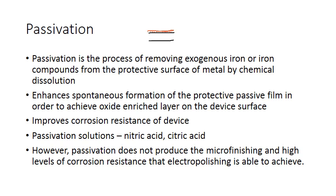Passivation involves putting metal pieces into passivation solutions such as nitric acid or citric acid, which essentially clean the device and remove any compounds that shouldn't be there, helping to protect the passive oxide layer. It doesn't produce the micro-finishing and high levels of corrosion resistance that electropolishing achieves, but it's often a very good first step.